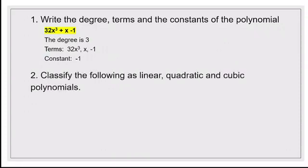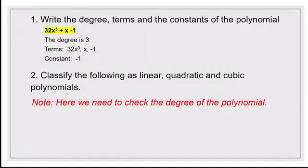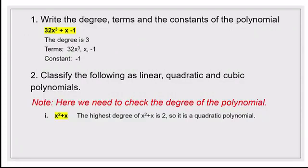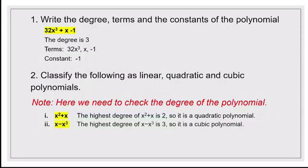Now let's see how to classify polynomials. We need to check the degree of the polynomial before classifying them. For x² plus x, the highest power of x is 2, so 2 is the degree. If the degree of the polynomial is 2, the polynomial is called a quadratic polynomial. So x² plus x is a quadratic polynomial. Next, x minus x³: here 3 is the highest power, so 3 is the degree.